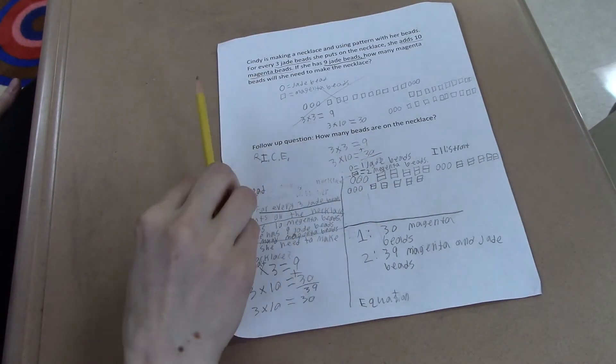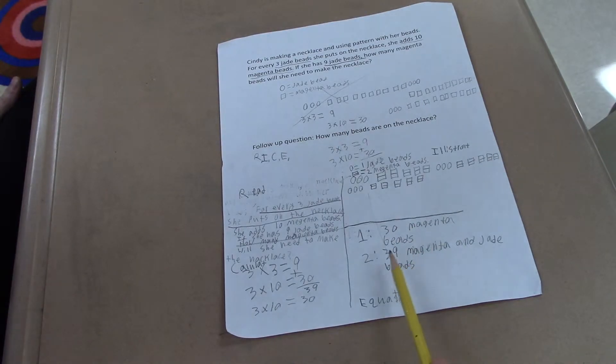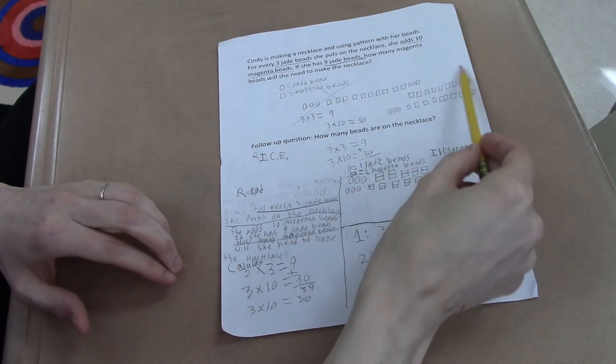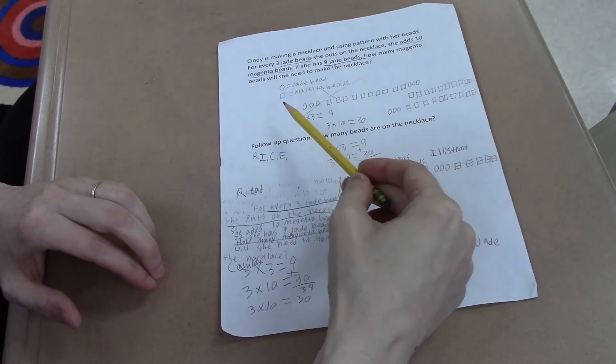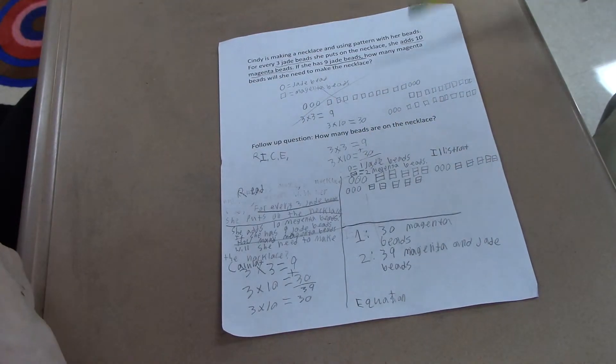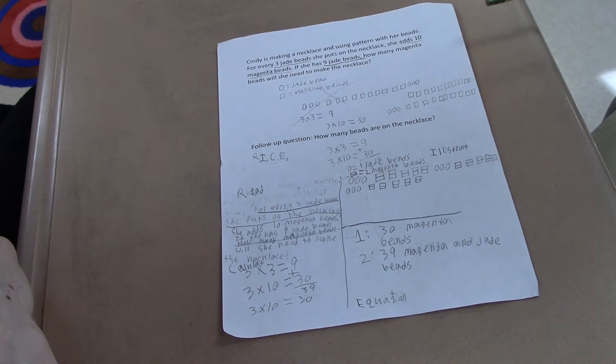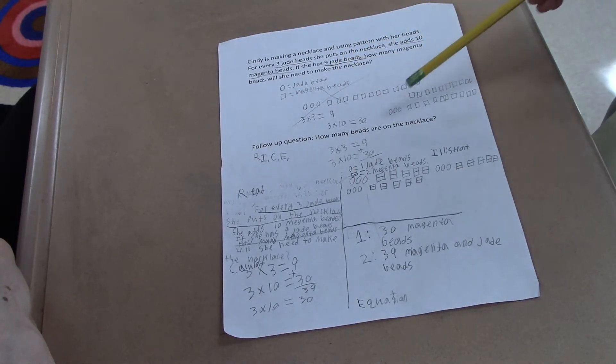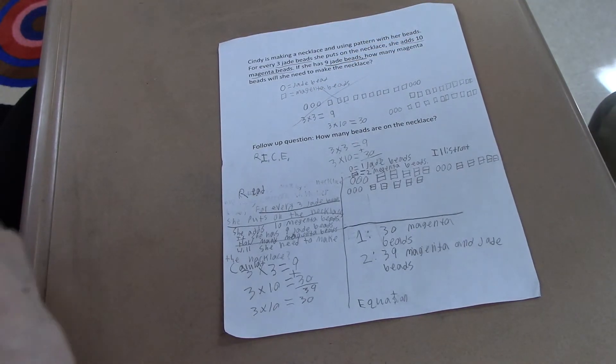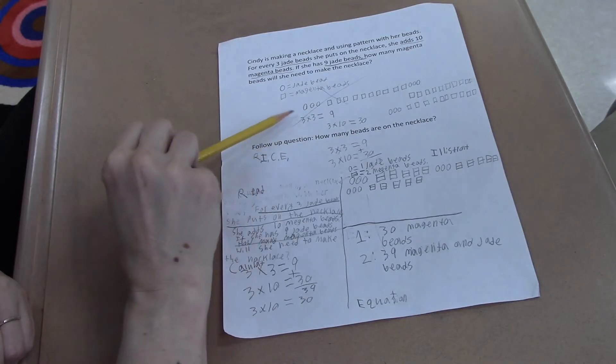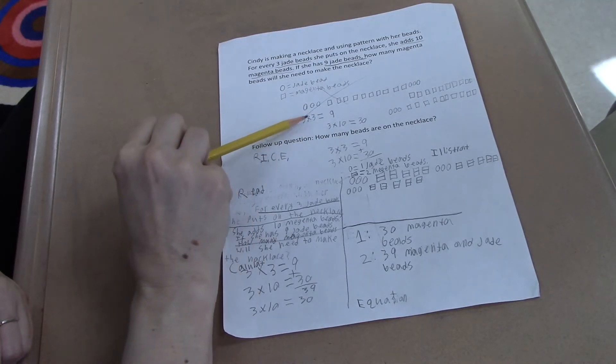Can you think about a way that you could have gotten to this solution of thirty-nine beads with the information that you gathered here? I could have counted by ten for this and then I would have gotten thirty and then I could have just added nine to it. And if you take a look at the work you did here,